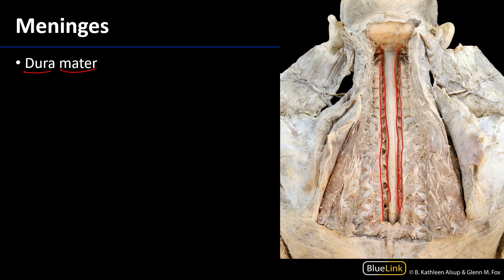Once you have the cervical spine laminectomy performed, you should be able to see the dura mater and the dural sac laterally. We can also see how the dural sac extends on the proximal portions of the spinal nerves, creating a protective environment for those nerves as they extend out through the intervertebral foramina.